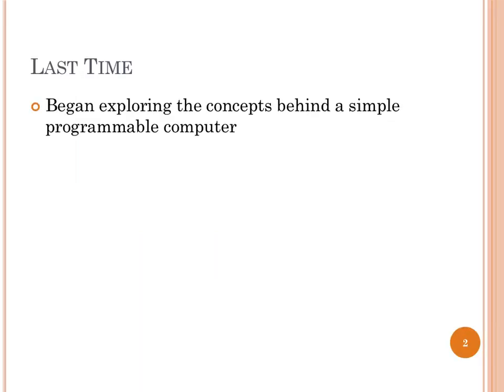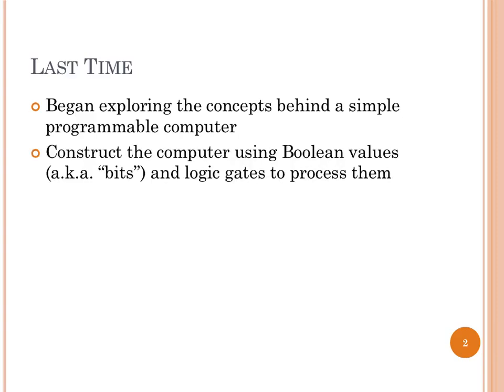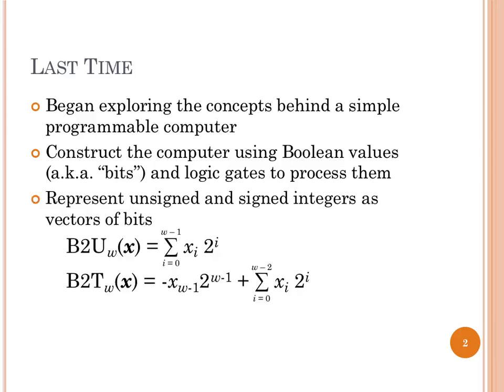Last time we started talking about how you build a programmable computing machine, starting with data representation. Since we're talking about binary digital computers, our minimal representation of information is a zero or a one. There's also a whole world of trinary with three values — minus one, zero, and one — but thankfully that didn't catch on. Zero and one is challenging enough, so we use Boolean values to represent information.